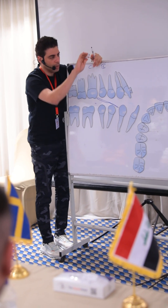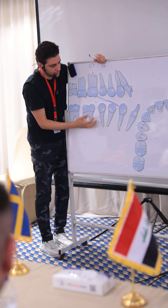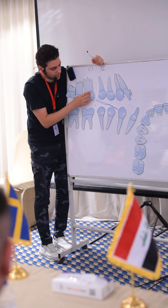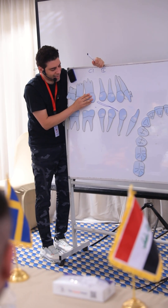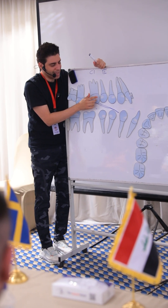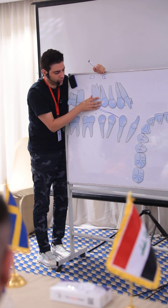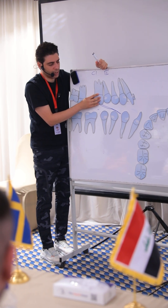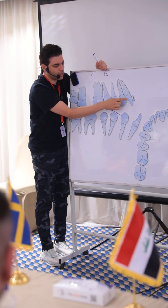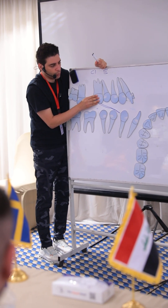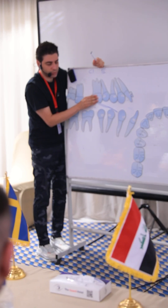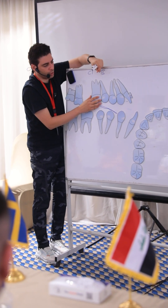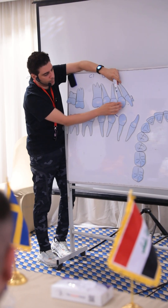You should use Class 3 elastics from the lower canine to the upper 6. The benefit of the elastics is mesializing the upper 6. The upper 6 will close the gap and touch the 5, then push the 5 mesially to touch the 4, and the 4 starts to touch the canine, and then the canine will push the incisors — so flaring will happen to the incisors.